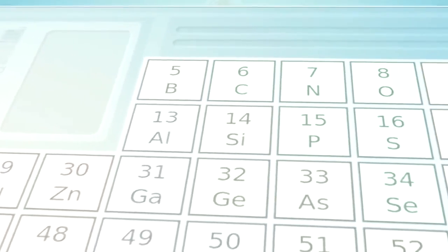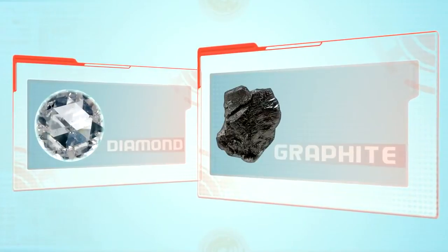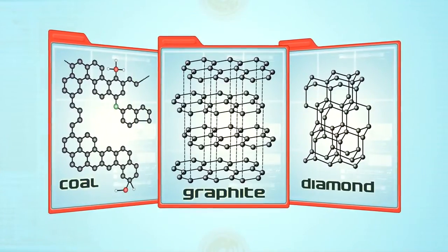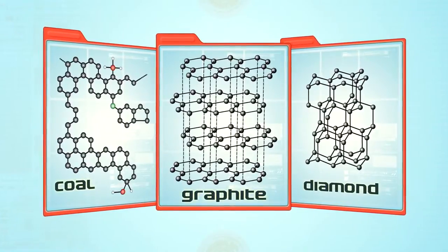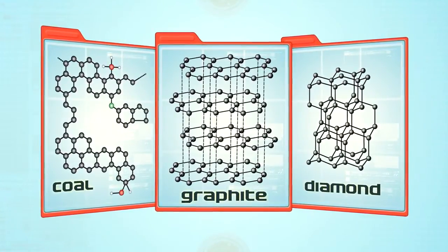Carbon comes in many crystalline forms, called allotropes. The most well-known are diamond and graphite. Allotropes are different forms of the same element, with different bonding arrangements between atoms, resulting in structures that have different chemical and physical properties.